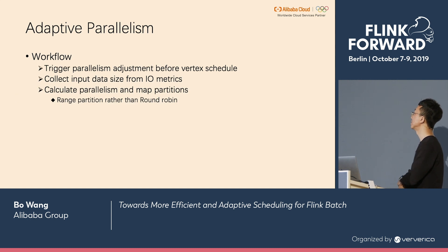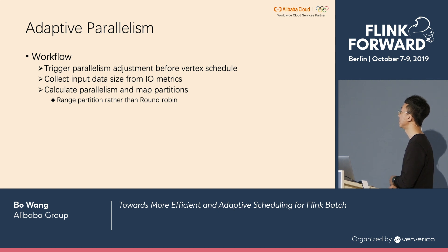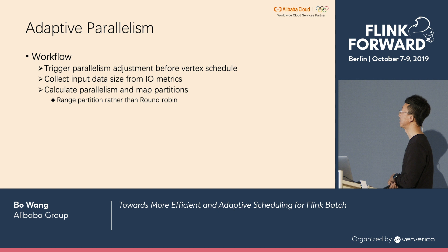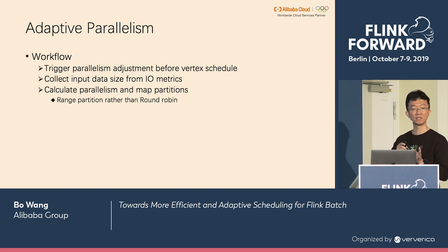Here is how the adaptive parallelism parameter works in the workflow. Before the vertex is scheduled, the job master collects enough data metrics. The job master then adjusts the parallelism to the suitable value and maps the partitions to the decreased sub-tasks. For the mapping algorithm, we choose range partitioning rather than round-robin, because in some use cases such as sort, the keys between partitions are ordered, so when a sub-task possesses multiple partitions it should possess successive partitions to keep the keys in order.